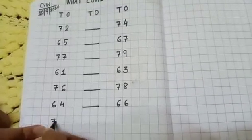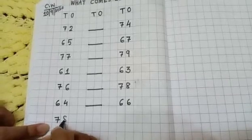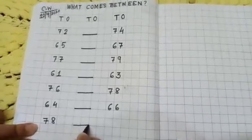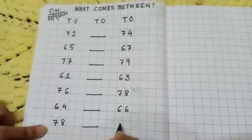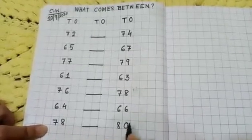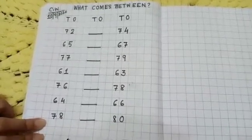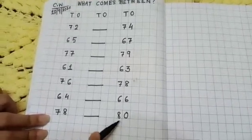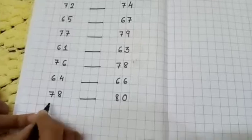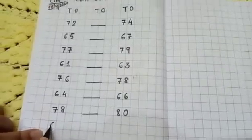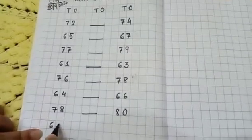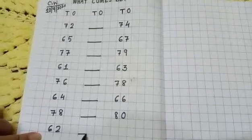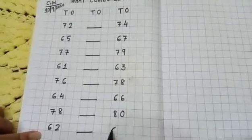Next, write: seventy-eight dash eighty. One more: sixty-two dash sixty-four.